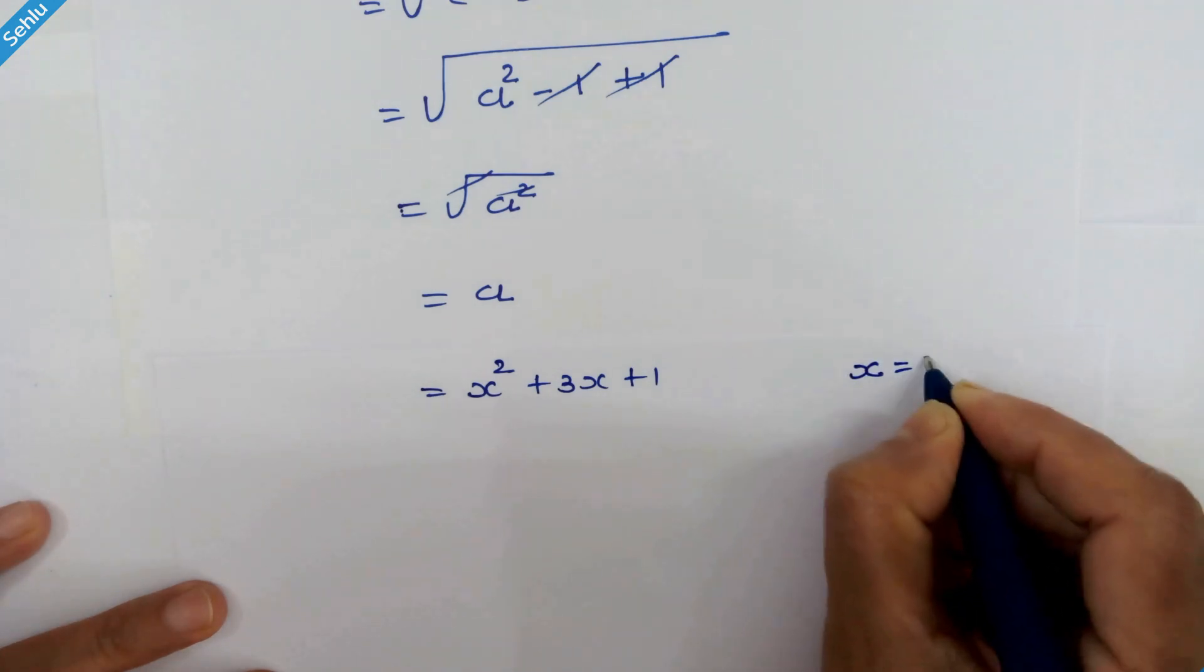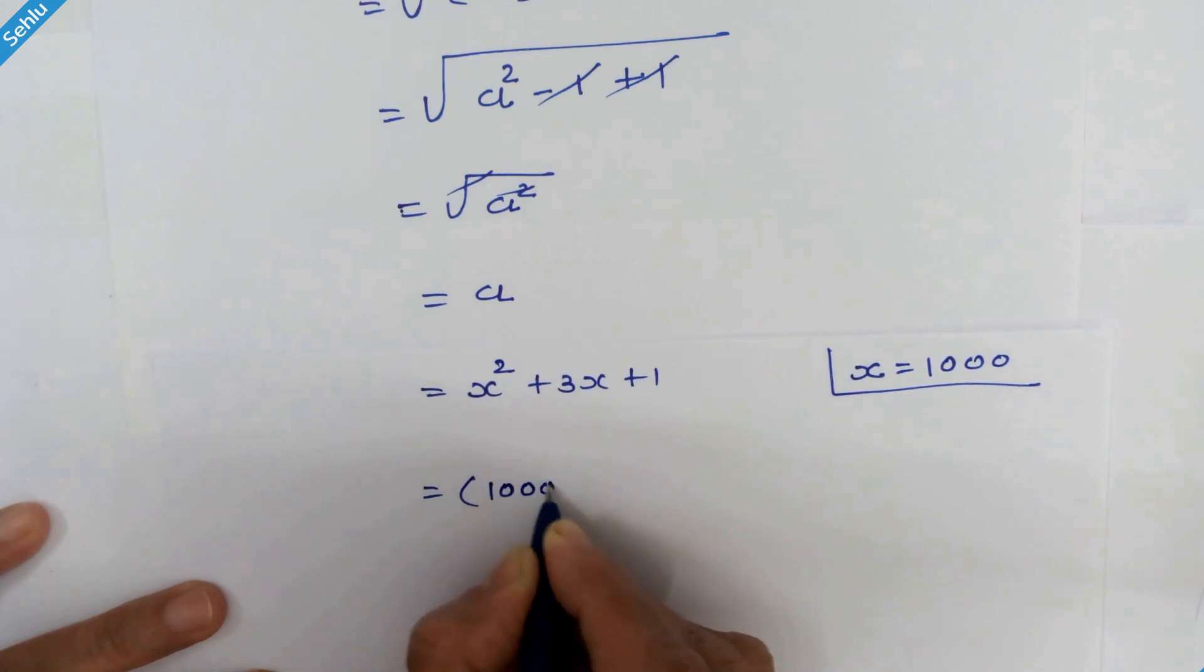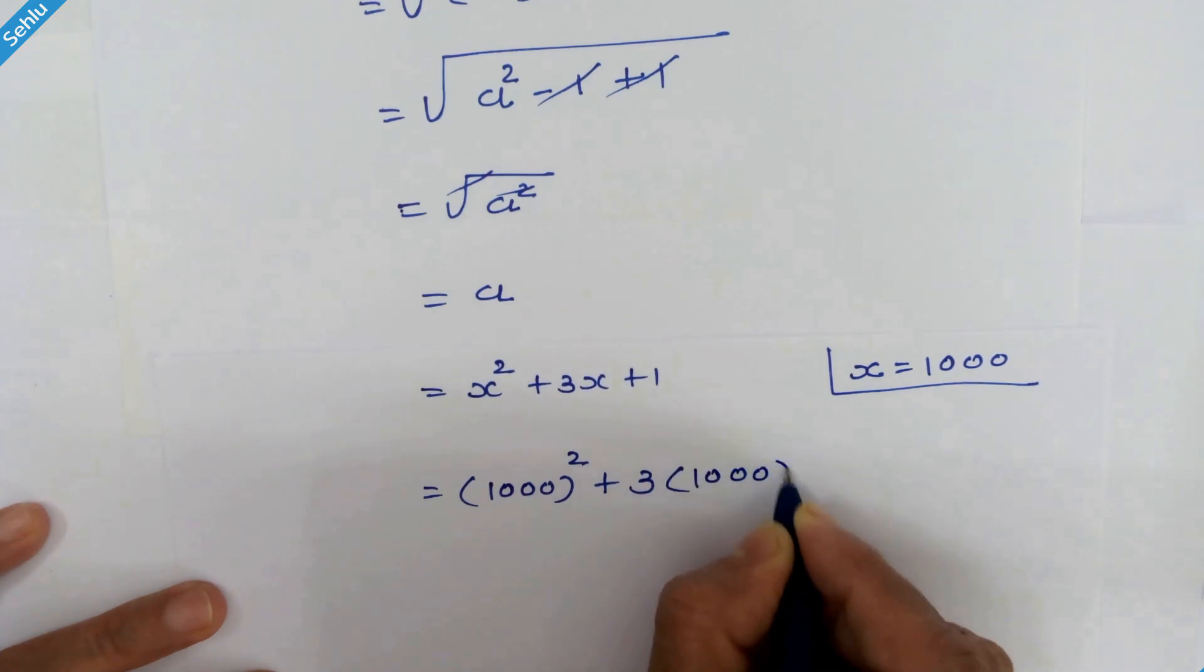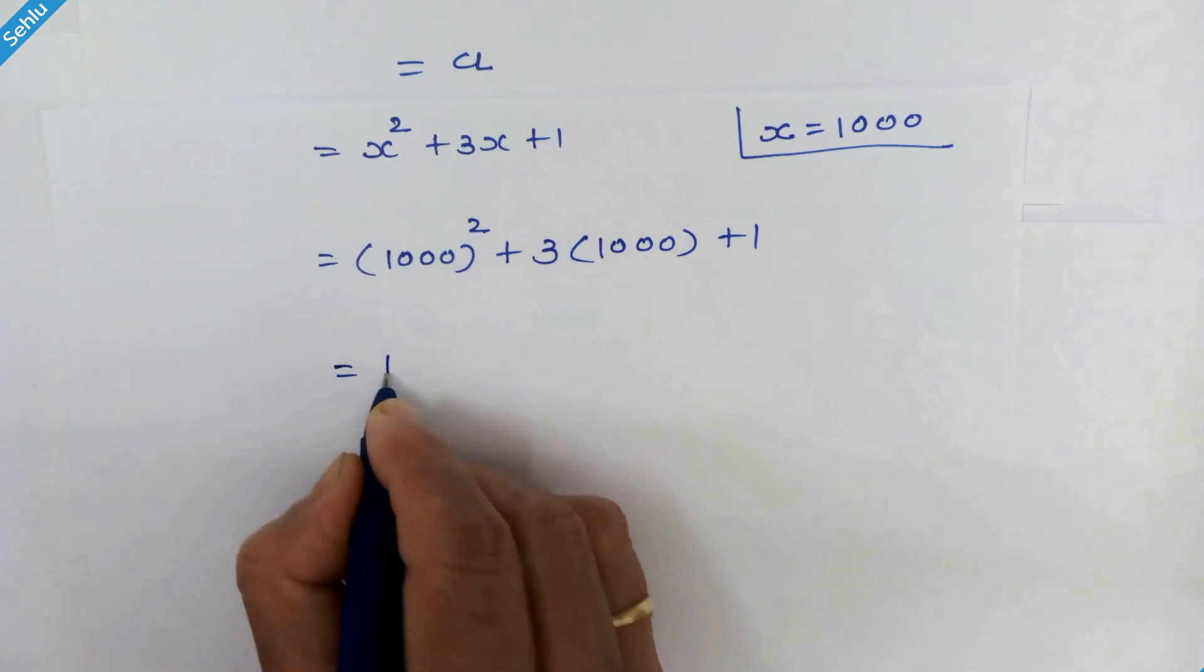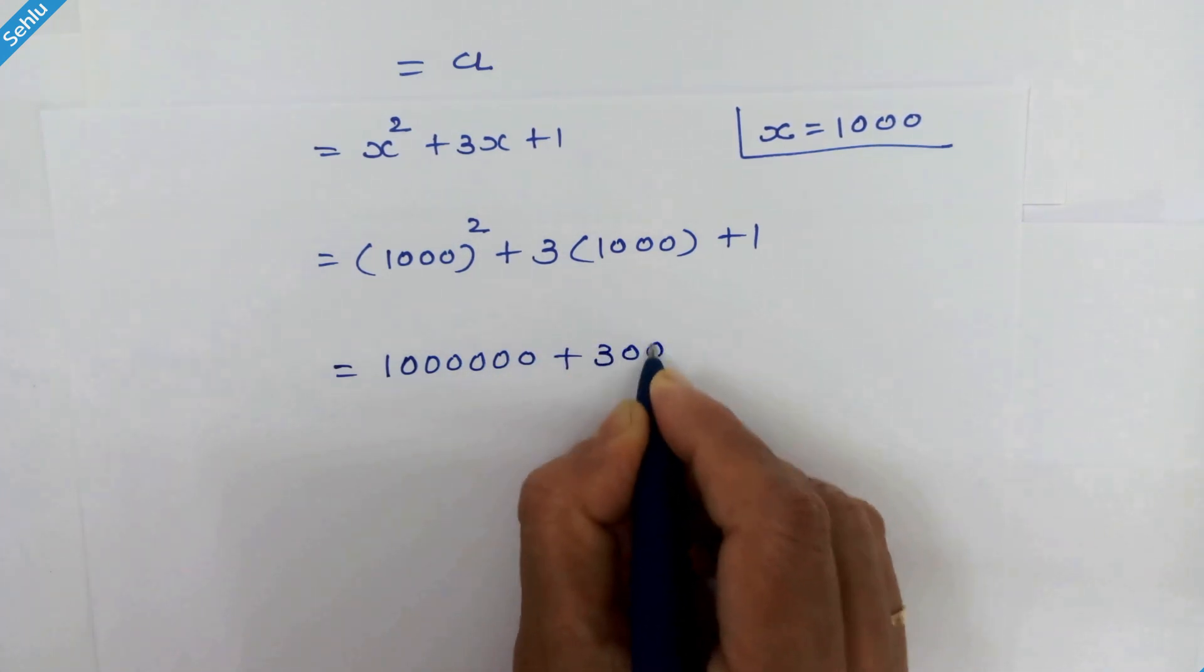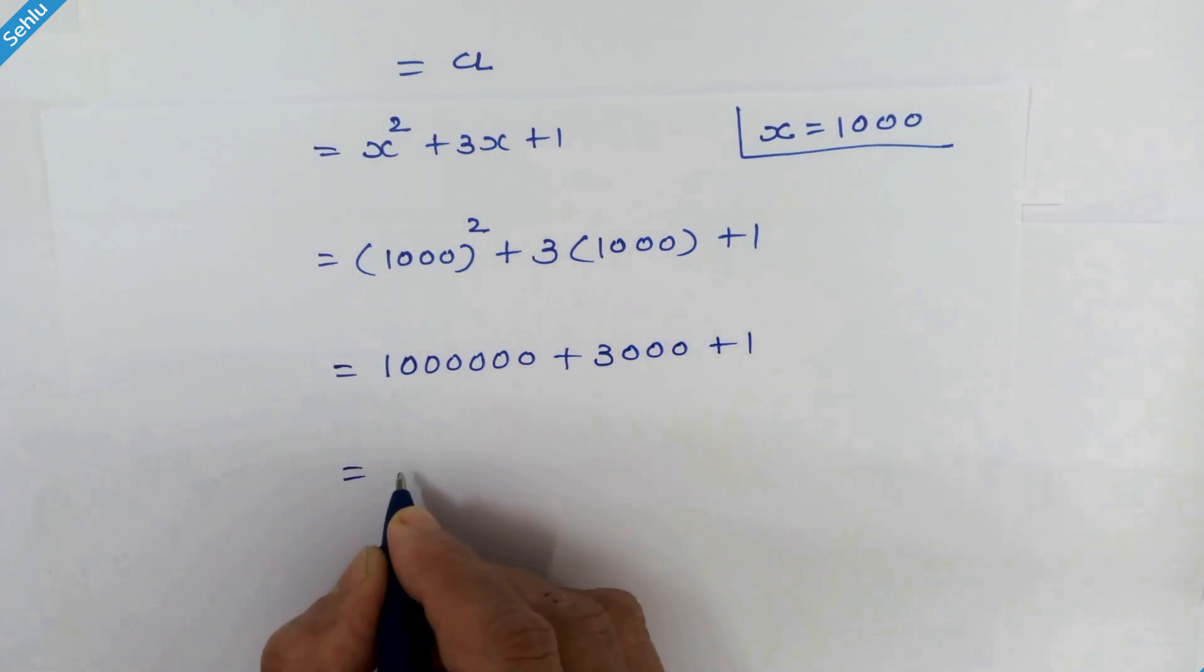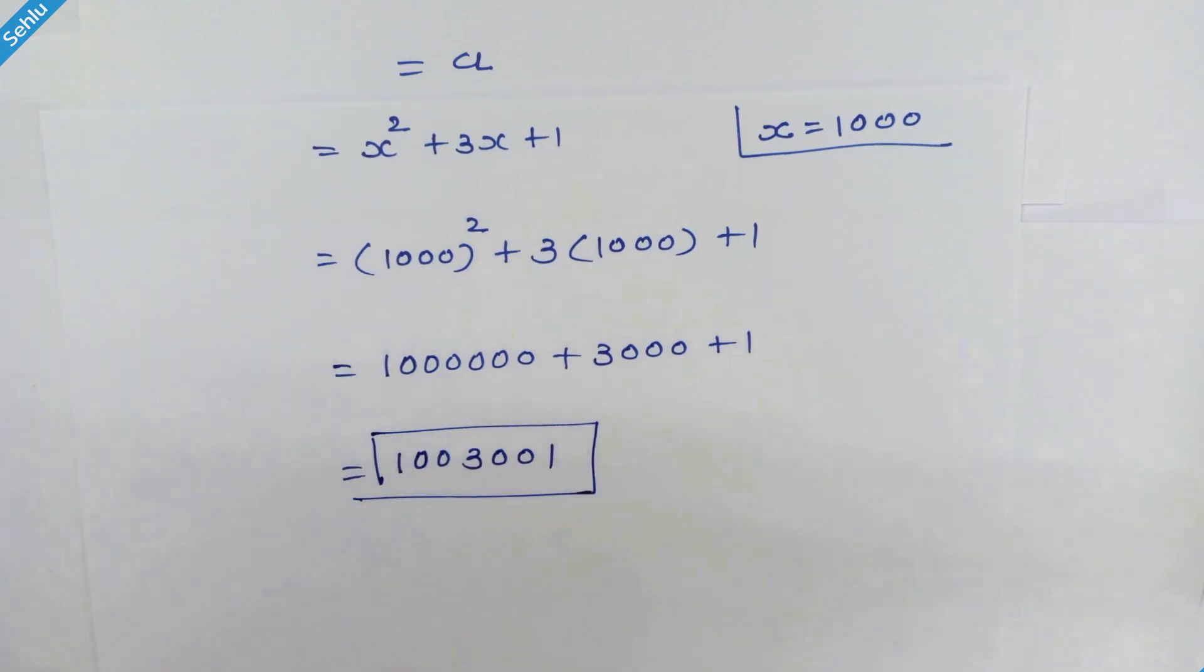So we have 1000 squared plus 3 times 1000 plus 1. 1000 squared is 1,000,000, plus 3000, plus 1, which equals 1,003,001. That's the answer.